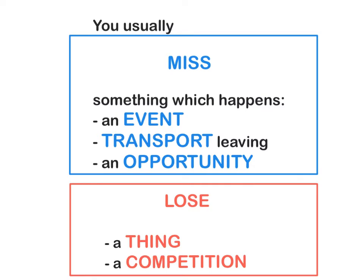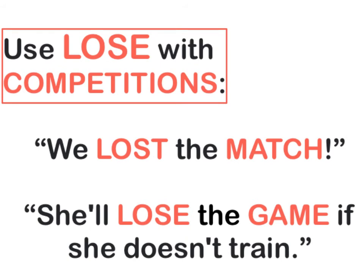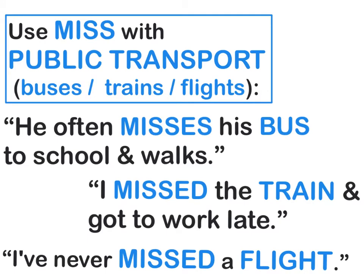You usually miss something that happens — you miss an event, you miss some public transport which is leaving, you miss some kind of opportunity. Whilst you lose a thing or you lose a competition. Use 'lose' with objects: 'I lost my mobile, I can't find it anywhere', 'I'm always losing my keys, I should put them in a safe place.' Use 'lose' with competitions: 'We lost the match', 'She'll lose the game if she doesn't train properly.'